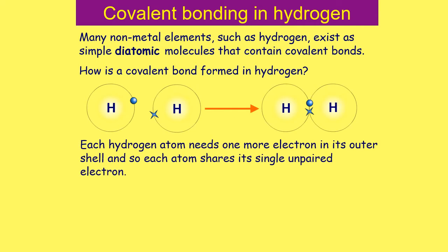Each hydrogen atom has one electron in its outer shell, which is shell number one. Shell number one can only hold two electrons, which means each hydrogen needs one more electron in its outer shell to complete it and achieve stability. So what happens is that these hydrogen atoms share their electron with another hydrogen atom.